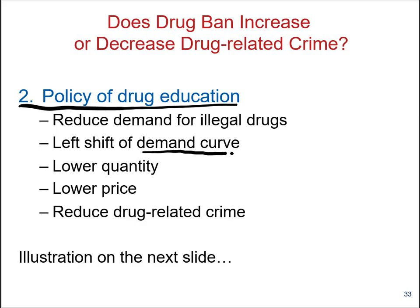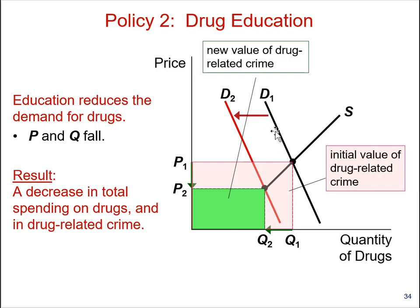As a result, at all prices, demand shifts and is reduced — the demand curve shifts left. Lower quantities are sold in the market and the price goes down, leading to a possibility of reduced drug-related crimes. In the graph, the black lines show the supply curve S and the original demand curve D1. At the current equilibrium we have P1 and Q1, and the product of the two gives total revenue for drug suppliers, funded through drug-related crimes.